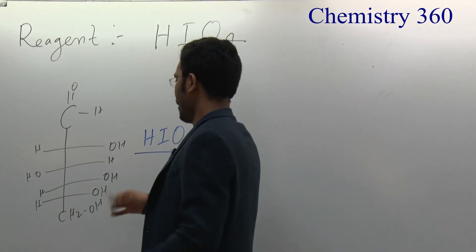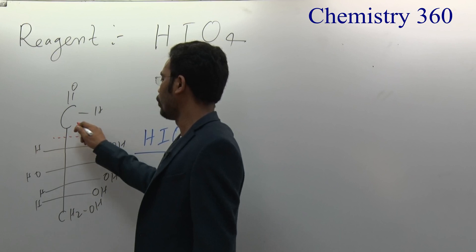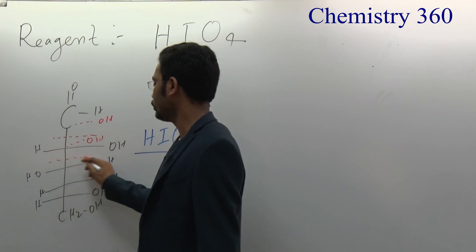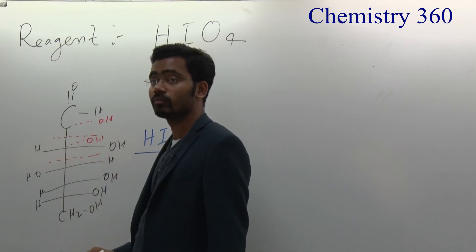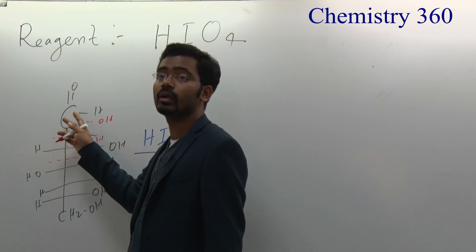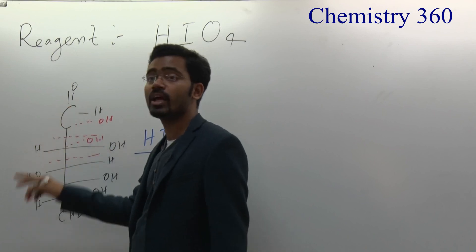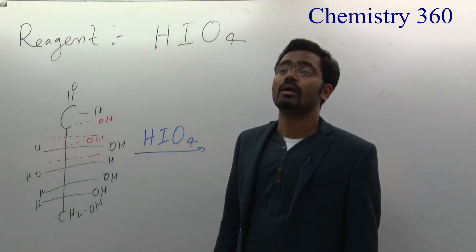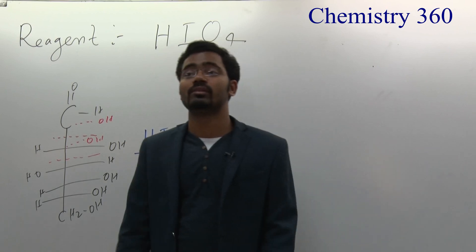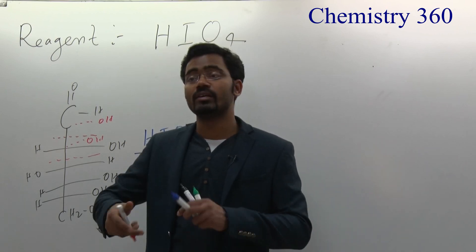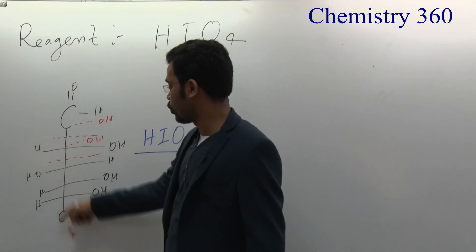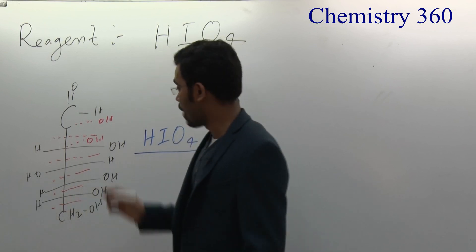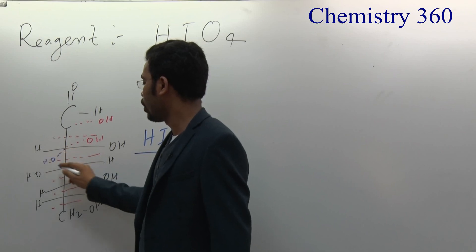First, break this bond and add one OH here and one OH here, then also break this bond. In SP2 there is no cis/trans restriction, and in an open chain there is no cis/trans because it can rotate. All carbons here have OH groups — OH, OH, OH, OH — so all bonds will break, and you write OH on each carbon.